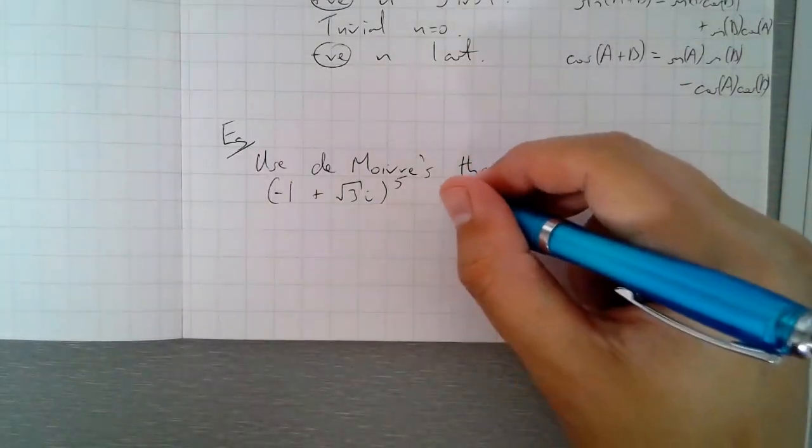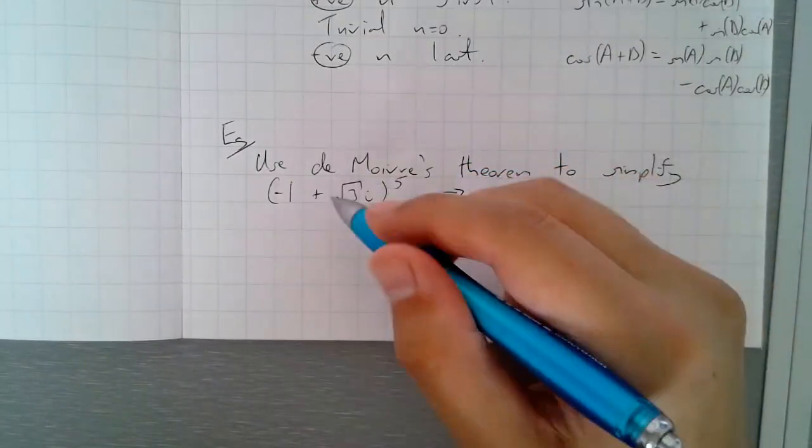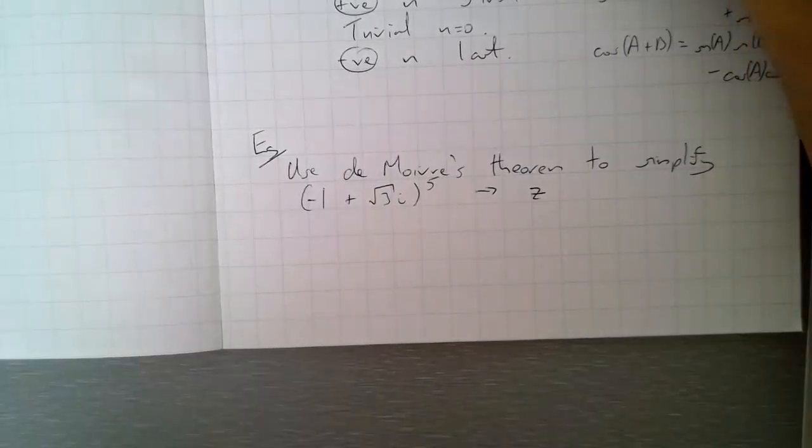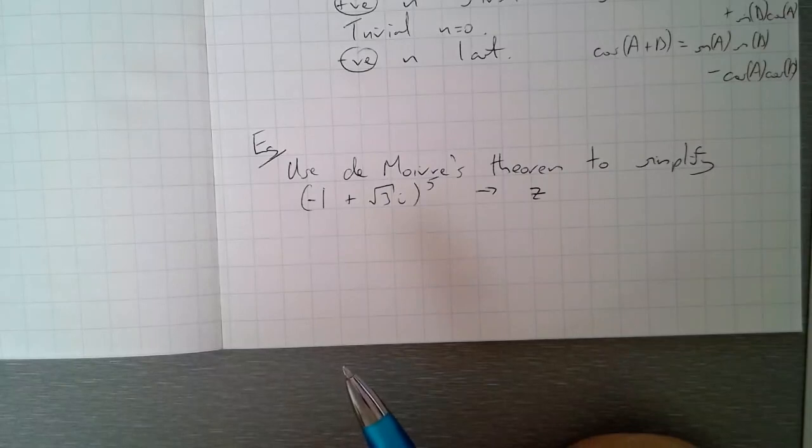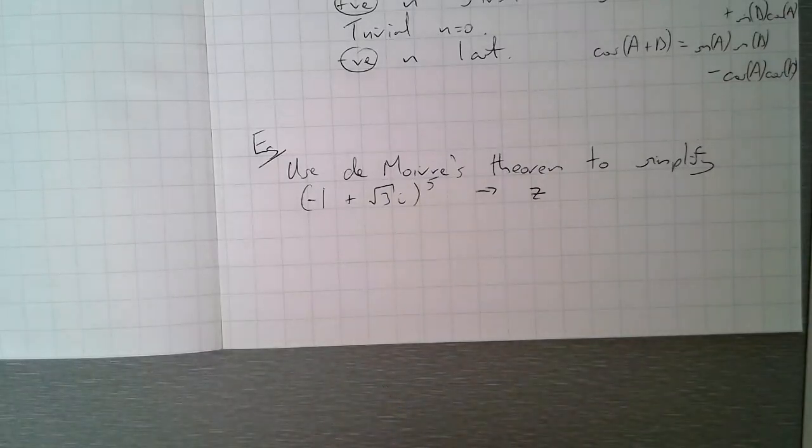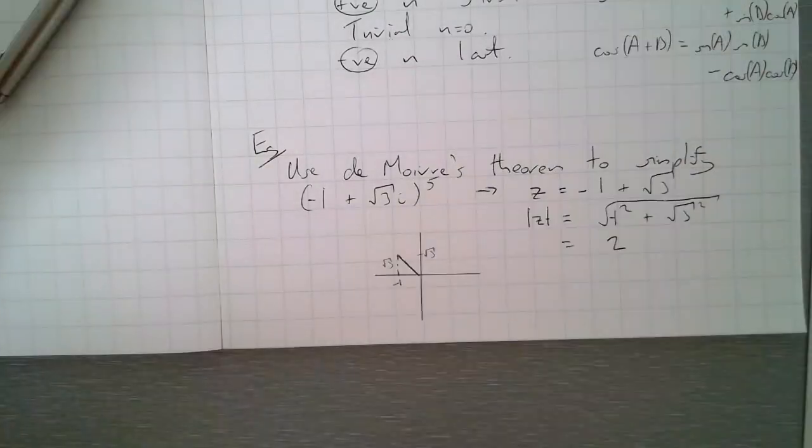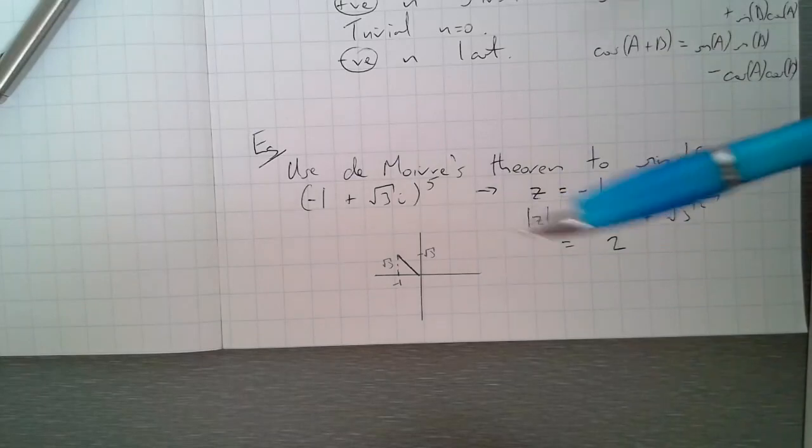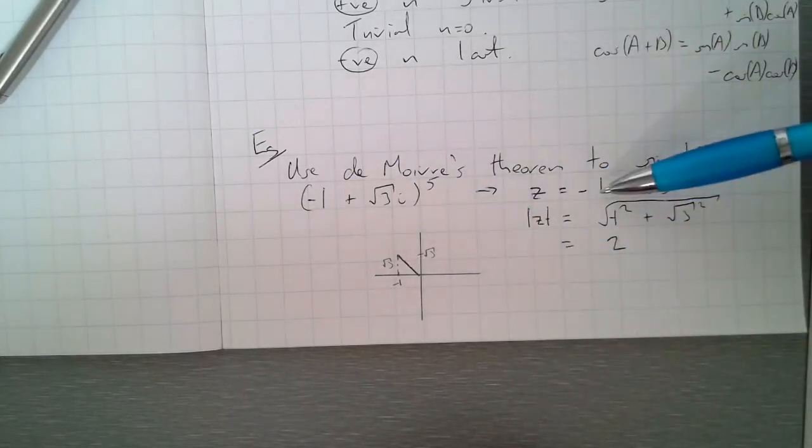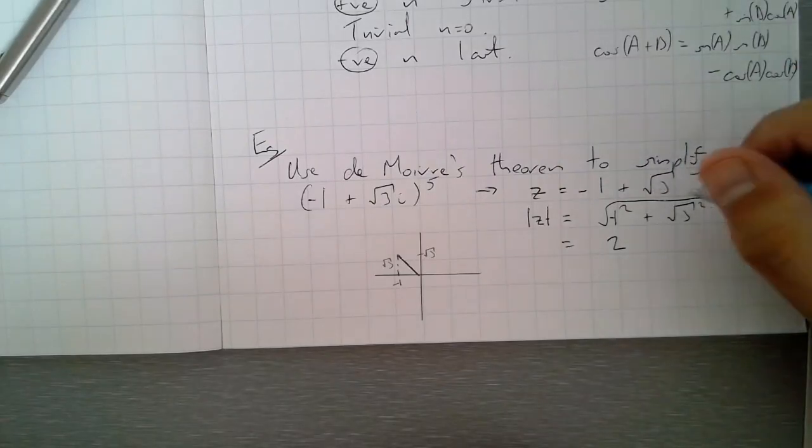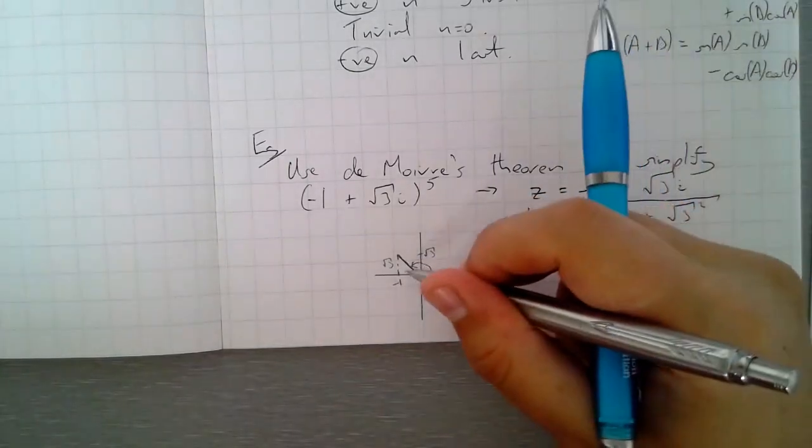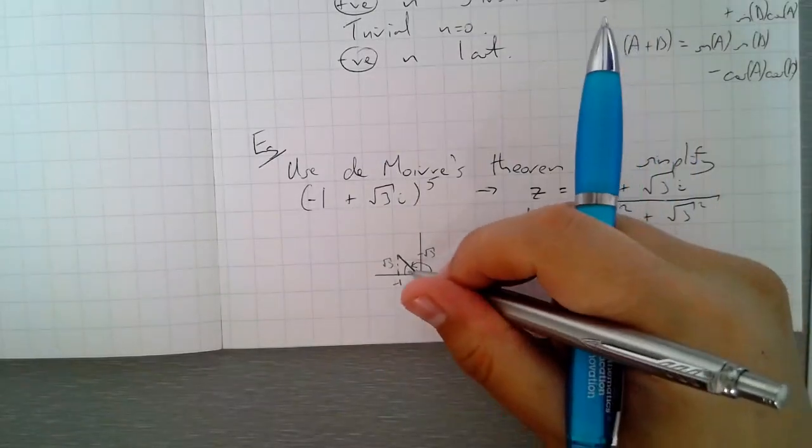So the first thing to do here is to work out what z is, what the inside of this bracket is. So have a quick go at trying to remind yourself how to convert from this form into modulus argument form. Think about the fact that you need the argument and you need the modulus. So pause the video, have a quick go at that. So hopefully you've found that the modulus of z is 2, which is pretty straightforward. And then what you should do is draw yourself a little diagram of where z is.